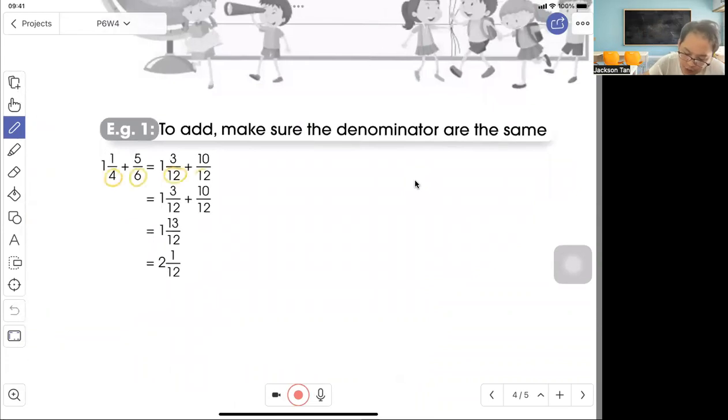To change to 12, you multiply by 3. 1 times 3 gives us 3. Here, multiply by 2. 5 times 2 gives us 10. Then you add, that gives us 1 whole, 13 out of 12. Change it to simplest form: 2 whole and 1 out of 12. Why is that so? Because 13 out of 12 equals 1 whole, 1 out of 12.